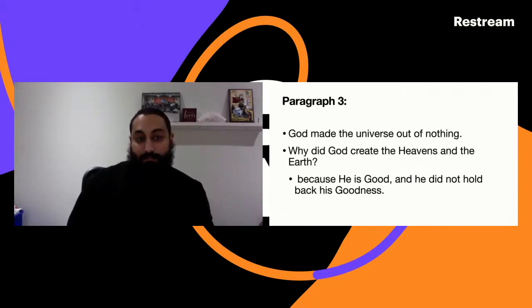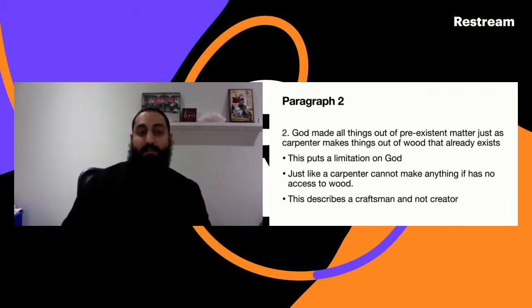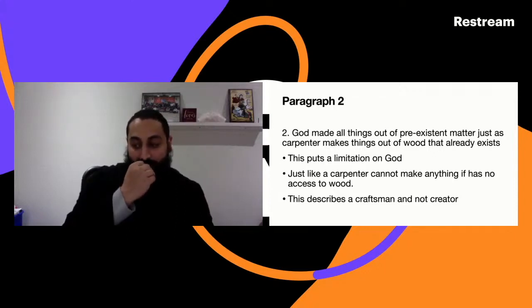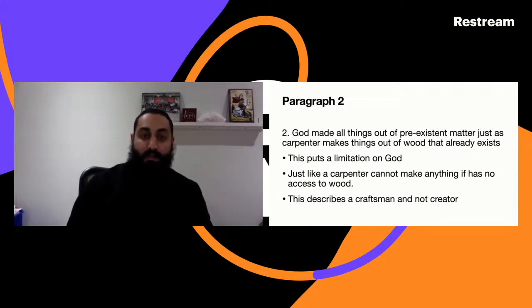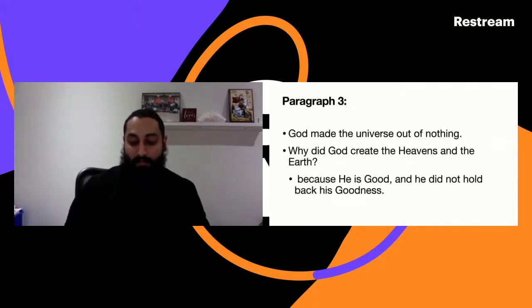In paragraph three, he establishes that God must have made the universe out of nothing. Why? Because if God made things out of pre-existent matter, this would put a limitation on God, meaning He is unable to be God. Because God by design, by definition, by the understanding of the word, must be the best, the strongest, the fastest. If I say I have the fastest computer in the world, that means it cannot be beaten. The day another computer that's faster comes on the market, it no longer holds the title.